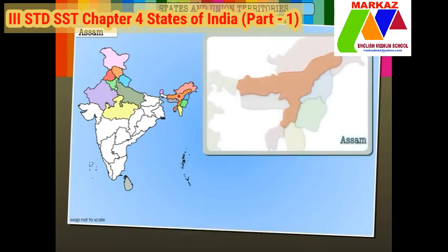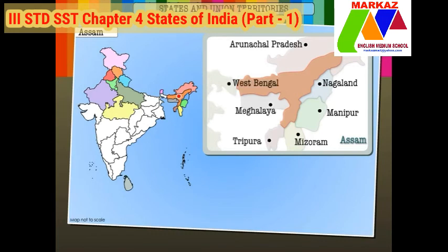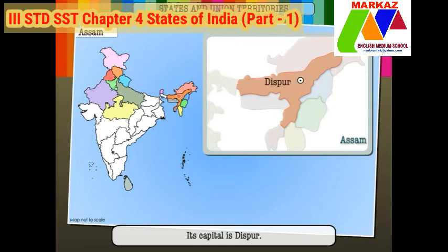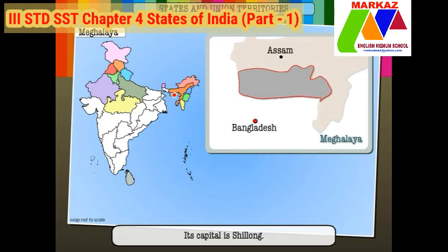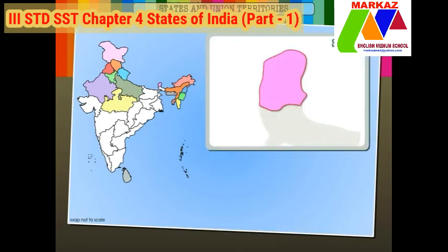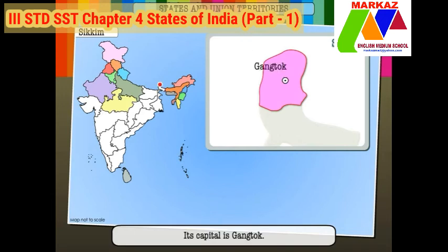Assam is bordered by Arunachal Pradesh, Nagaland, Manipur, Mizoram, Tripura, Meghalaya and West Bengal in India and shares the international border with Bhutan and Bangladesh. Its capital is Dispur. Meghalaya is bordered by Assam in India and shares the international border with Bangladesh. Its capital is Shillong. Sikkim is bordered by West Bengal in India and shares the international border with Bhutan, Nepal and China. Its capital is Gangtok.